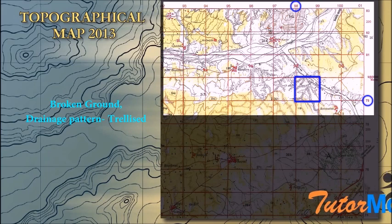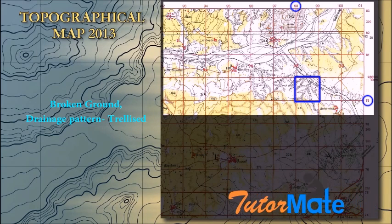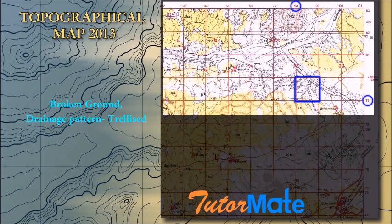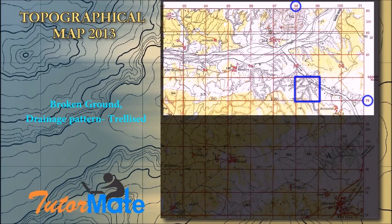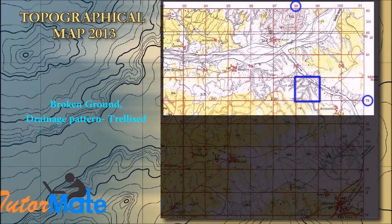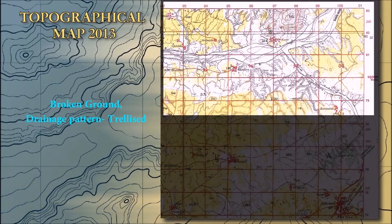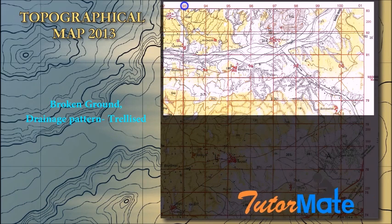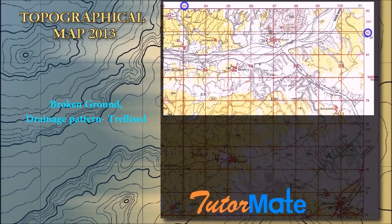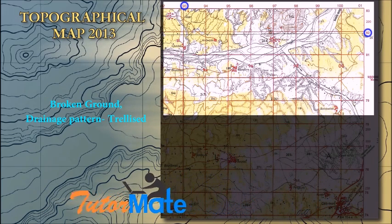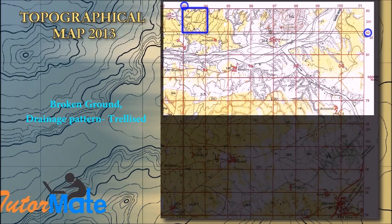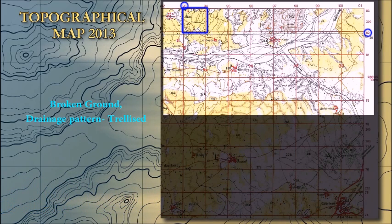For the next sub-question, the drainage pattern in grid square 9382: look into the confined grid 9382 and you can see small streams joining the mainstream. So the drainage pattern is dendritic.